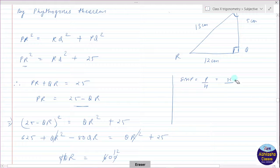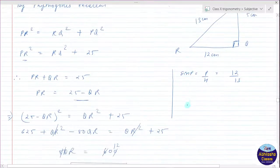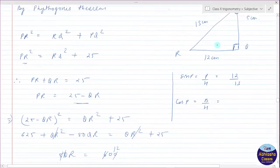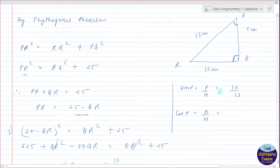Then cos P, cos P will be base upon hypotenuse. So base, the base is 5 cm, so it is 5, and hypotenuse is 13 cm.